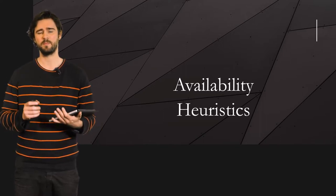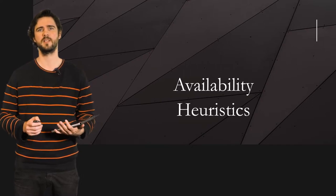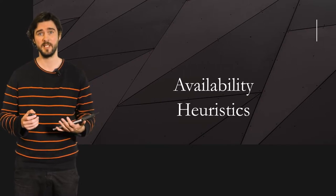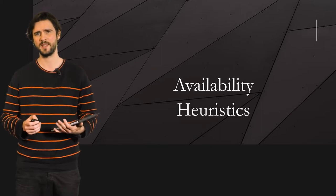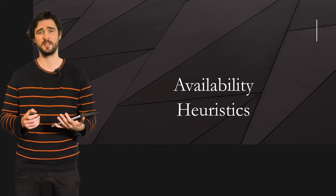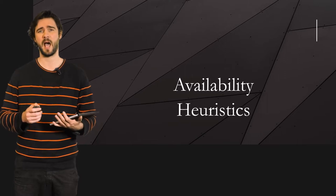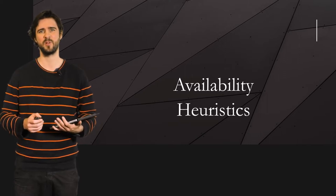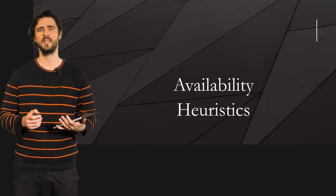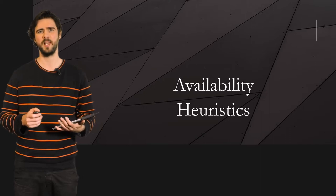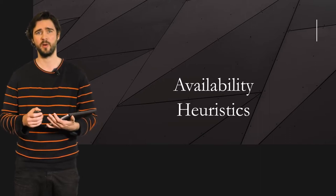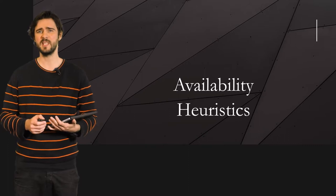The one heuristic we will talk about in this video is called the availability heuristic. It happens when you try to evaluate the likelihood of an event based on how easily an example comes to your mind. It becomes a problem if you downplay or ignore other relevant facts. Let me give you an example.